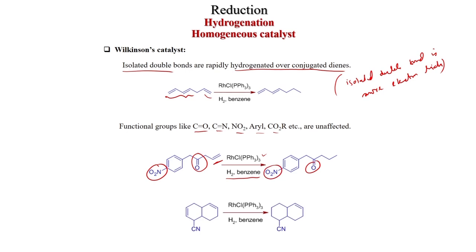Functional groups such as carbonyl, imine, NO2, aryl, CO2R, etc., are unaffected. For example, with a substrate containing NO2, carbonyl, and a double bond, Wilkinson's catalyst with H2 in benzene selectively reduces the double bond while the two functional groups are untouched. Also, when a nitrile group is present and two double bonds exist, the double bond closer to a quaternary carbon (more steric hindrance) is left unreacted, and Wilkinson's catalyst selectively reduces only the less hindered double bond.